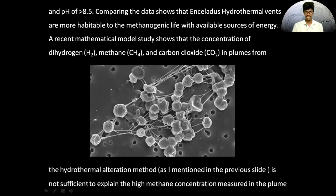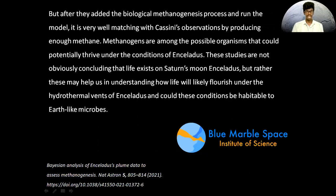A recent mathematical model study shows that the concentration of hydrogen, methane, and carbon dioxide in the plumes from serpentinization alone is not sufficient to explain the high concentration of methane measured in the plume. But after they added the biological methanogen process and ran the model, it matched very well by producing enough methane. This shows that methanogens are among the possible mechanisms that could potentially drive life under the conditions of Enceladus.